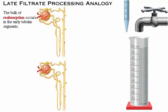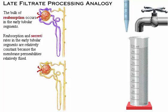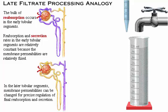The bulk of reabsorption occurs in the early tubular segments. In these regions, the rates of both reabsorption and secretion are relatively constant because the membrane permeabilities are relatively fixed. In the later tubular segments, the membrane permeabilities change in response to changing physiological conditions and hormone levels. This variability provides a mechanism for precisely regulating the final balance of fluid and solutes returned to the blood.